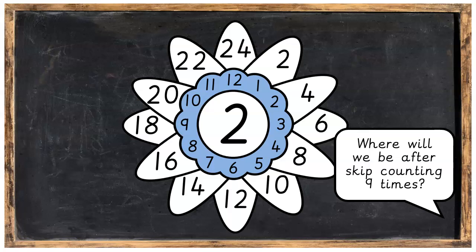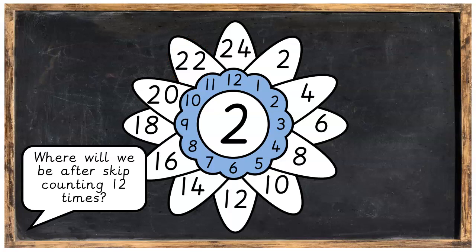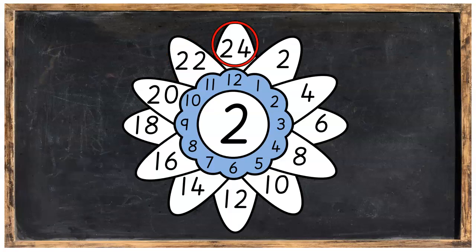Do you know where we will be after skip counting nine times? Well done, 18. And then we've got 20. Skip counting 11 times we'll get 22. And then finally after skip counting 12 times we're going to get 24.